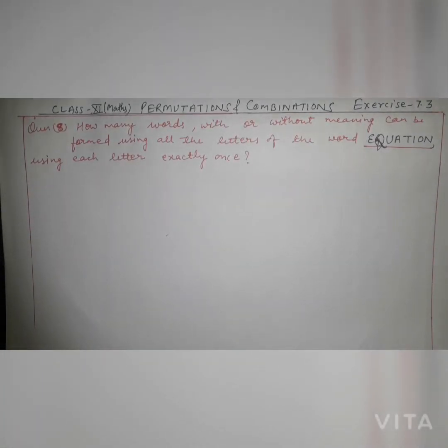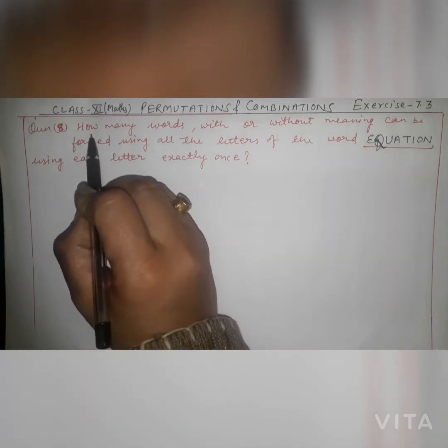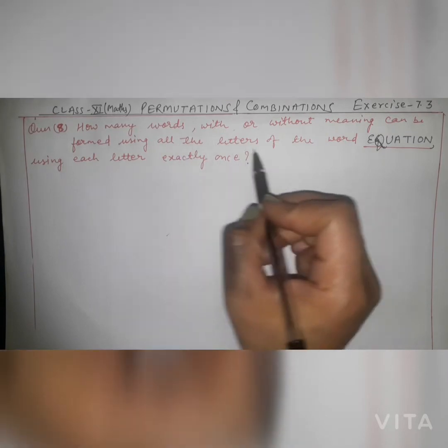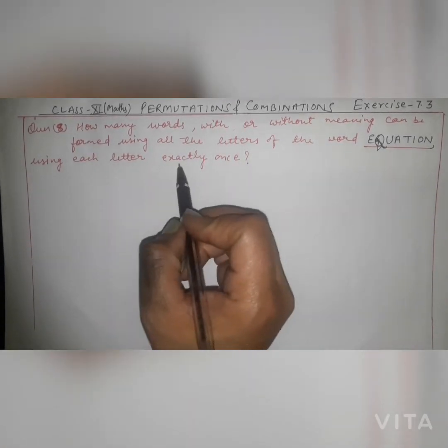Hello students, welcome to my YouTube channel. In this video we will do question number 8, Exercise 7.3. The chapter name is Permutations and Combinations. We have already covered question number 7, now we will do question number 8. The question is: how many words, with or without meaning, can be formed using all the letters of the word EQUATION, using each letter exactly once?